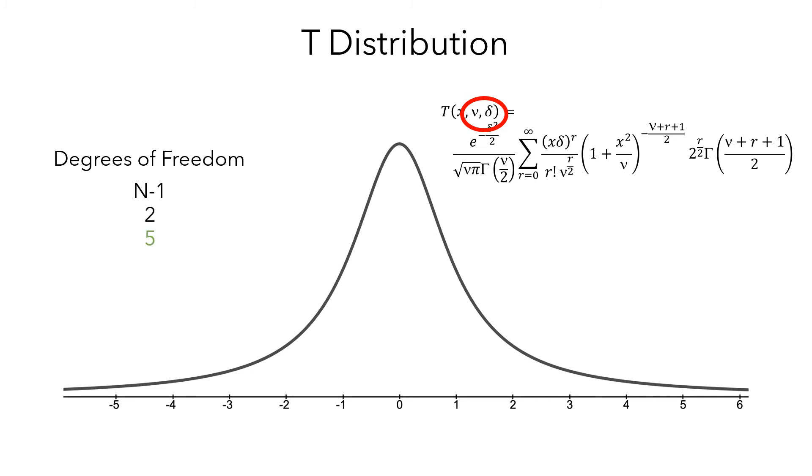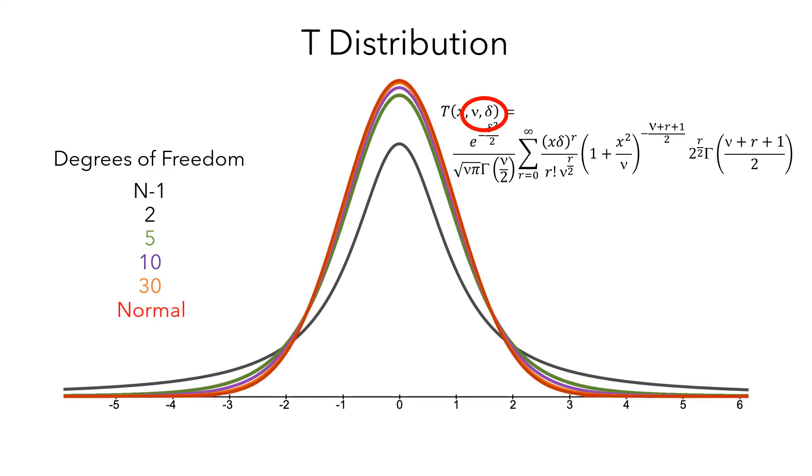For a sample with 5 degrees of freedom, the distribution would look like this, and then 10 degrees of freedom would look like this, and 30 degrees of freedom. And as the degrees of freedom, and the sample size, increases, the t-distribution becomes increasingly similar to a normal distribution.